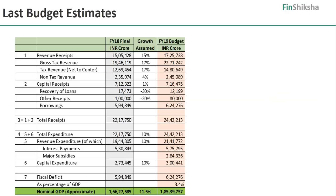Let's start with last year's budget estimates — what the Government of India had given in terms of FY19 budget. The FY18 final numbers versus FY19 budget numbers are now visible. At the bottom of the screen you see the nominal GDP number, with an expectation of 11.5 percent growth in nominal GDP, resulting in a GDP number of about 1.85 lakh crore. The gross tax revenue was expected to be about 22 lakh crore, approximately 12.5 percent of GDP — a substantial jump of about 17 percent over the prior year.